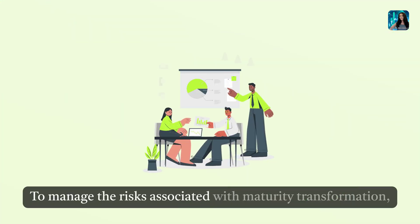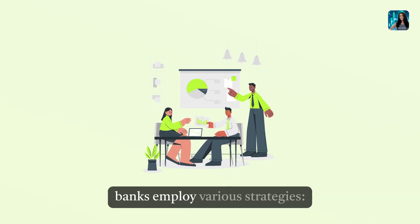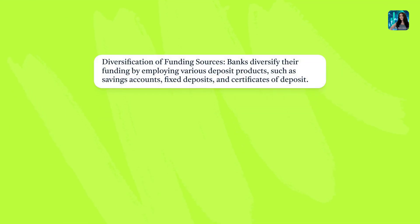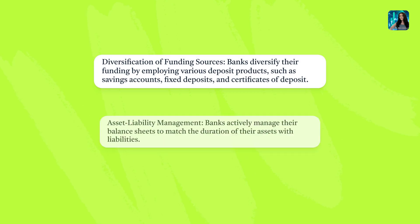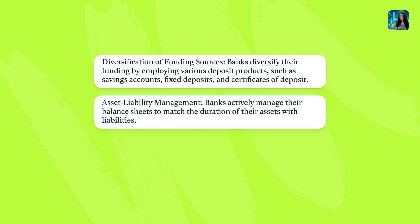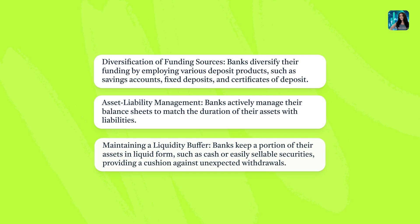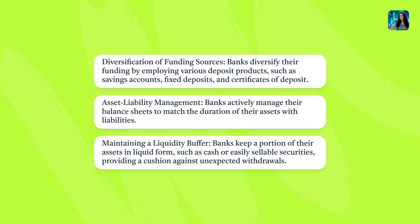How banks balance the transformation process. To manage the risks associated with maturity transformation, banks employ various strategies. Diversification of funding sources: banks diversify their funding by employing various deposit products, such as savings accounts, fixed deposits, and certificates of deposit. Asset liability management: banks actively manage their balance sheets to match the duration of their assets with liabilities. Maintaining a liquidity buffer: banks keep a portion of their assets in liquid form, such as cash or easily sellable securities, providing a cushion against unexpected withdrawals.